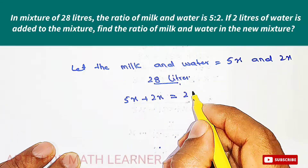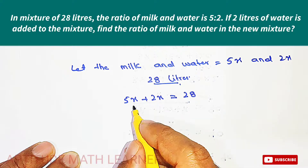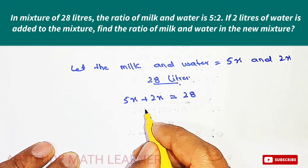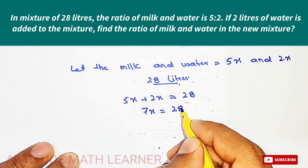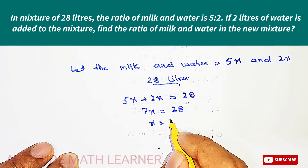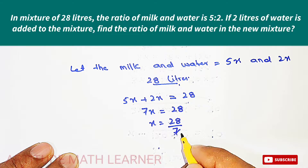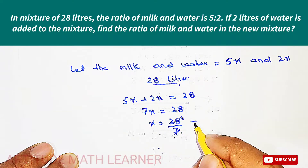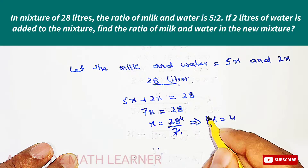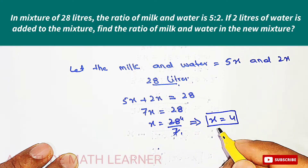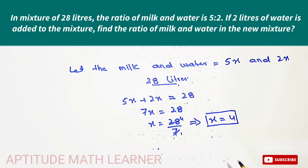So 5x plus 2x equals 28 liters. This becomes 7x equals 28, and x equals 28 divided by 7, which gives us x equals 4.